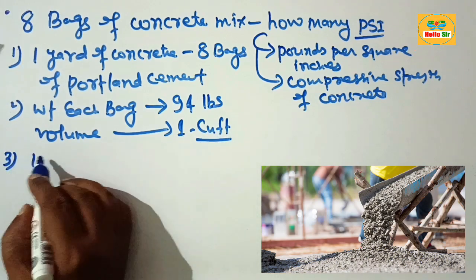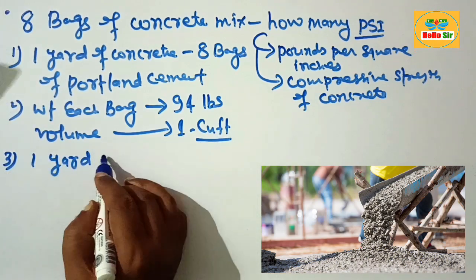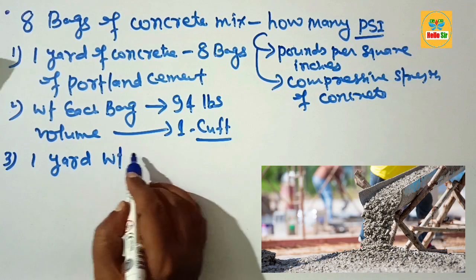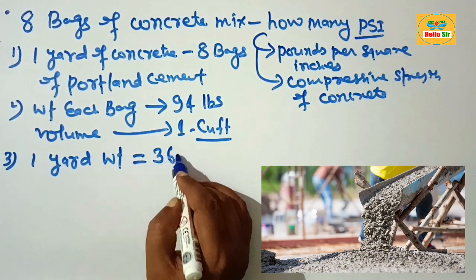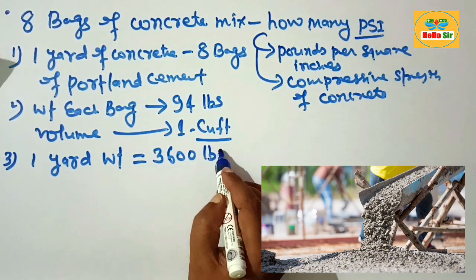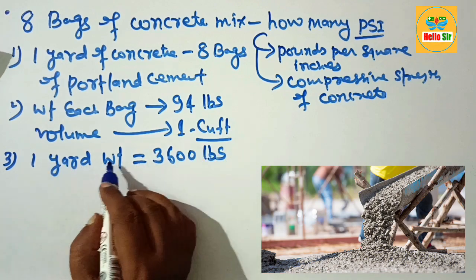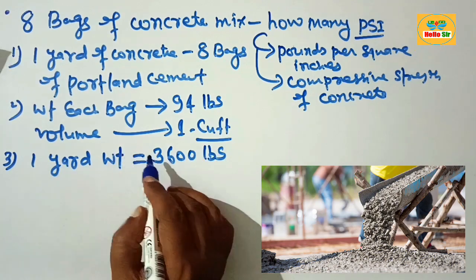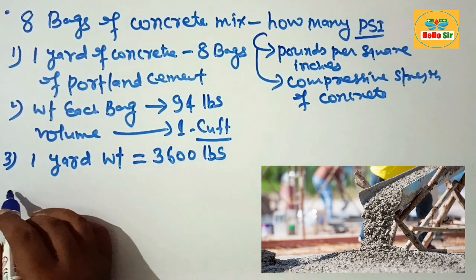And 1 cubic yard of concrete weighs about 3600 pounds. Remember: 1 cubic yard of concrete weight is about 3600 pounds.